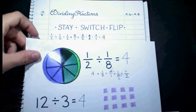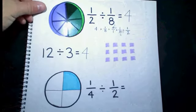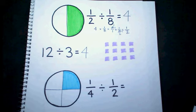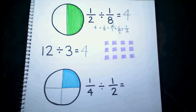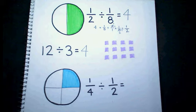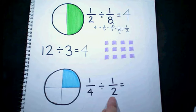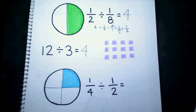So let's look at another model. I want to do 1 fourth divided by 1 half. Remember, I'm trying to make groups of size 1 half — how many groups can I make starting with 1 fourth? This is just like in division with whole numbers: if your dividend is smaller than your divisor, your answer is going to be smaller than 1, because I don't even have one whole group of this size starting with a smaller dividend.